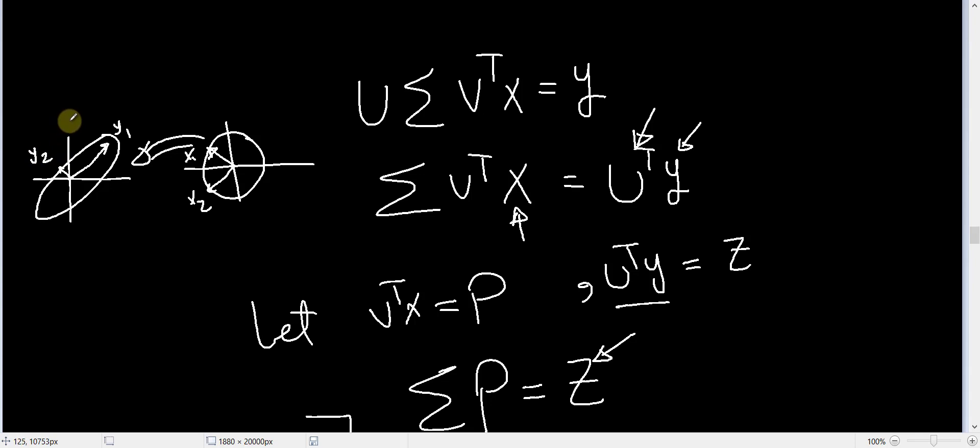And what the SVD diagonalization picture tells us is the following. We first rotate our vector X until X₁ comes here, X₁ dash, and X₂ comes here.